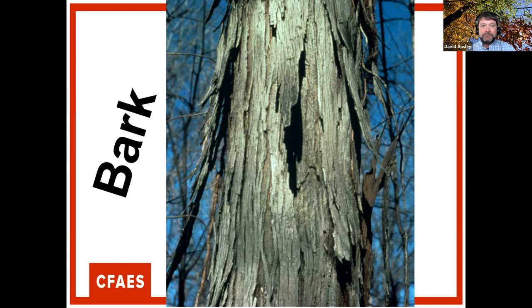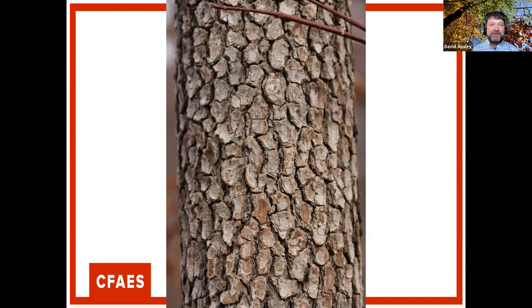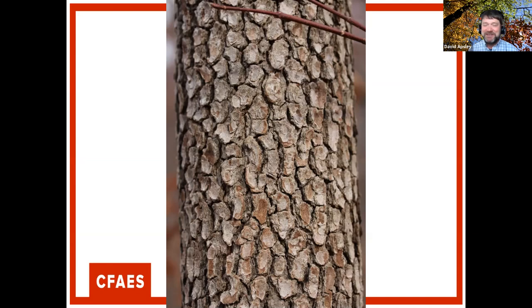Blocky, deeply furrowed bark belongs to persimmon (left) and black gum (right) — they look similar but have subtle color differences and less deep fissures on black gum. A chat participant correctly identifies a third example as flowering dogwood, which looks very similar; tree size also plays a role in bark appearance.